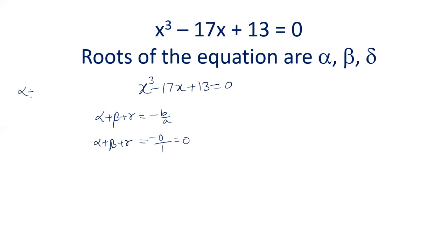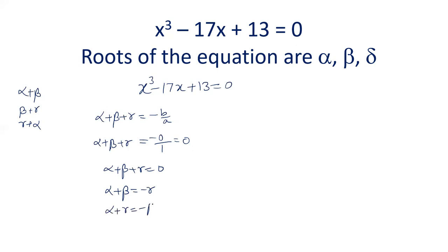We have to form the equation whose roots are alpha plus beta, beta plus gamma, and gamma plus alpha. Since alpha plus beta plus gamma = 0, we get: alpha plus beta = minus gamma, alpha plus gamma = minus beta, and beta plus gamma = minus alpha.